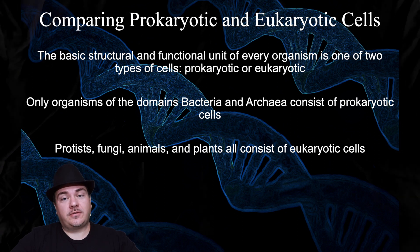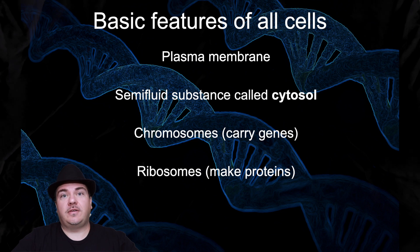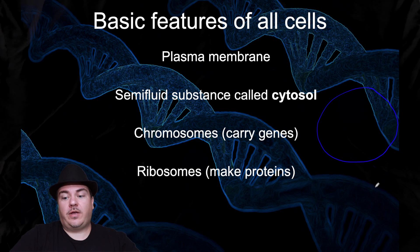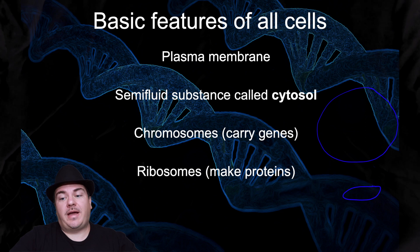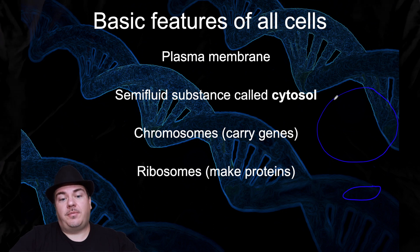But before we talk about the differences, let's talk about the similarities. No matter what type of cell it is, whether it's a eukaryote or a prokaryote, all cells have these same basic features. All cells have a plasma membrane — something that defines the boundary of the cell, separating what is the cell from what is not the cell from the environment.